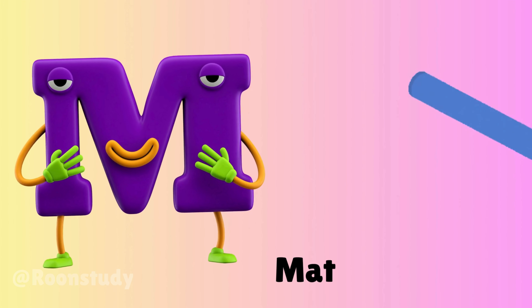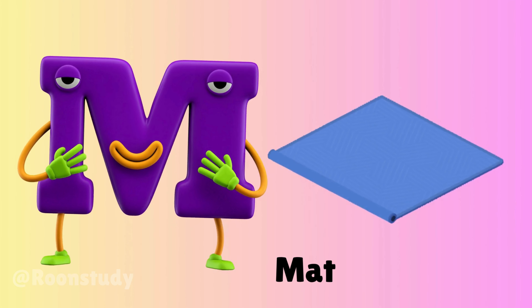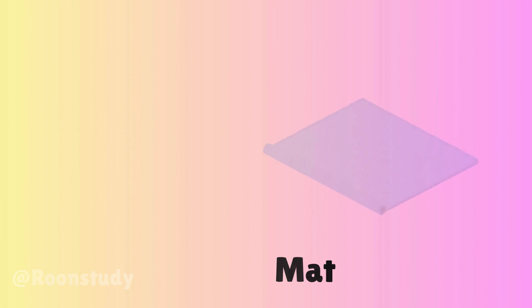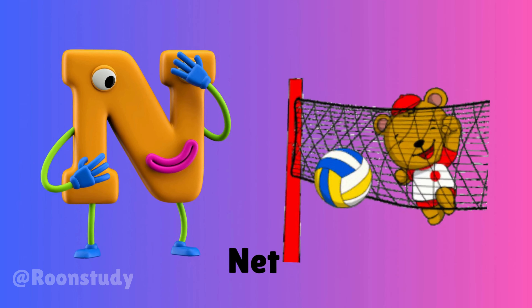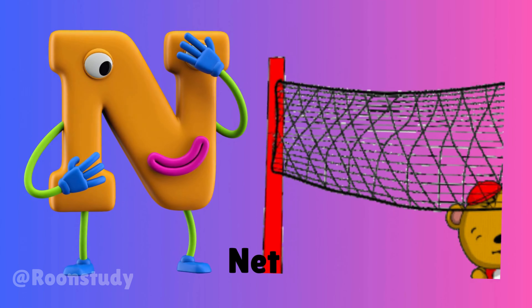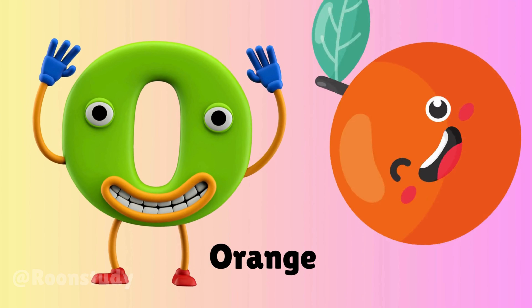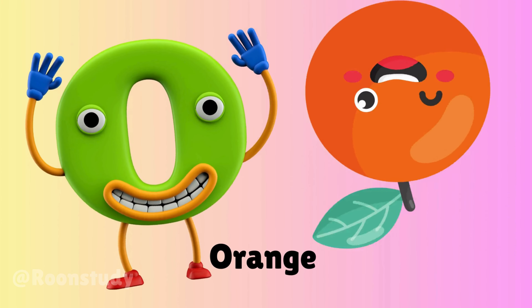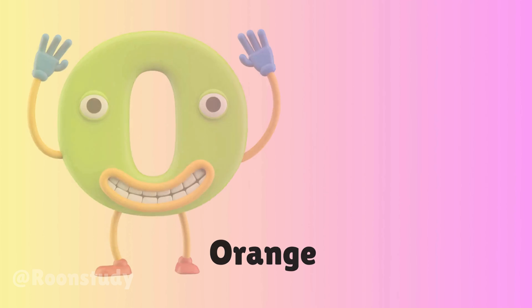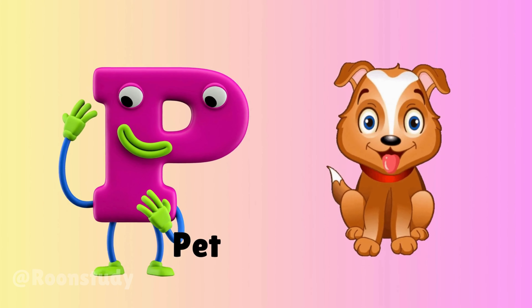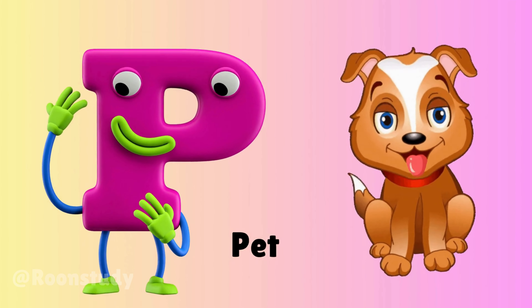M is for mat, m-m-mat. N is for net, n-n-net. O is for orange, o-o-orange. P is for pet, p-p-pet.